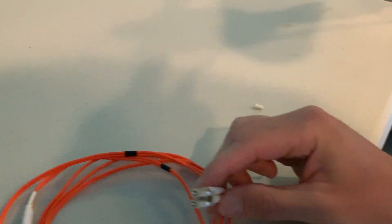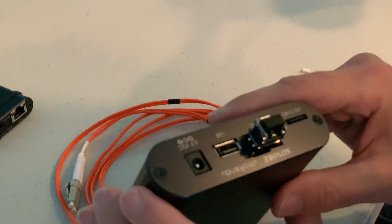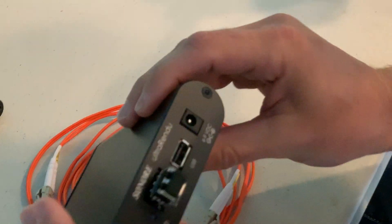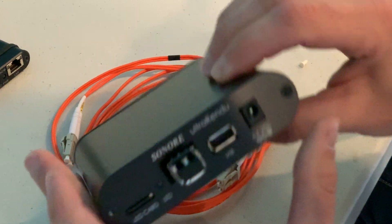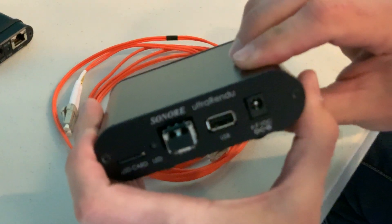This is our Optical Rendu here. You can see it has this SFP module. When you get this, it'll already be in here, but I'm going to show you how to take this SFP module out—you can use another one if you want.